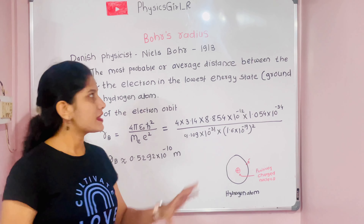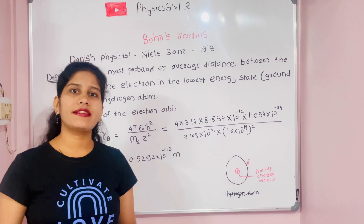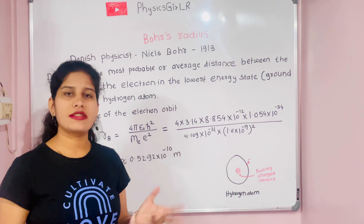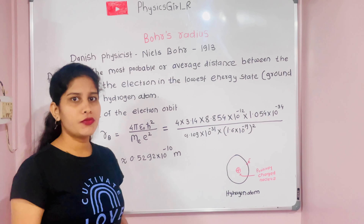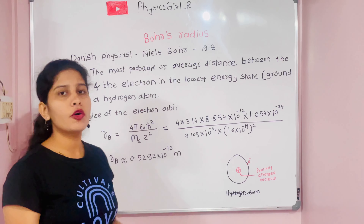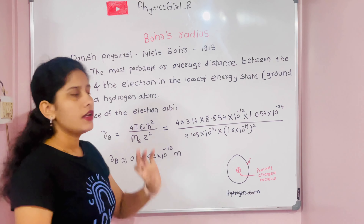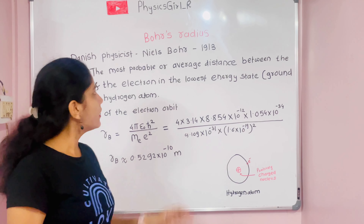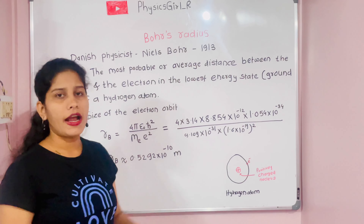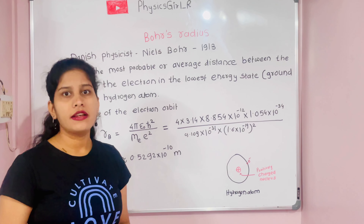The main concept we will cover is the Bohr radius. The name indicates that the scientist who discovered the Bohr radius is Niels Bohr. He was a Danish physicist and he discovered the Bohr radius concept in 1930.